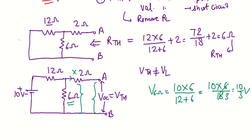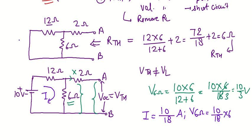A second method is to find the total current I = 10/18 ampere, then the voltage drop across 6 ohm = (10/18) × 6 = 10/3 volt — the same result. Either the voltage division formula or Ohm's law can be used to find the drop across the 6 ohm resistance. Since this 6 ohm is in parallel with terminals A and B, VTH = 10/3 volt.